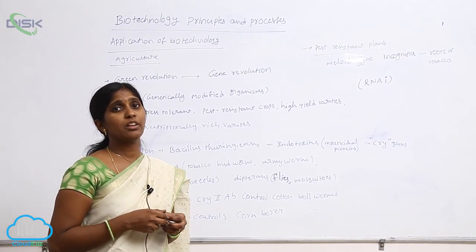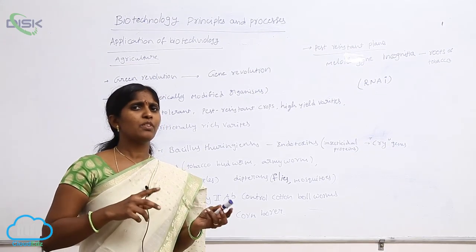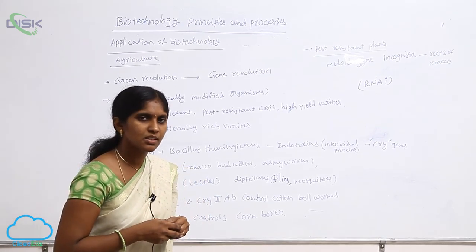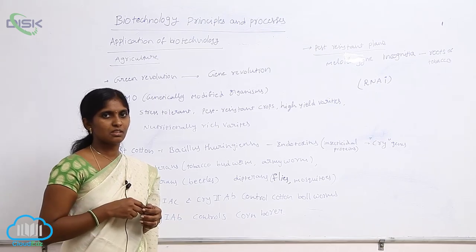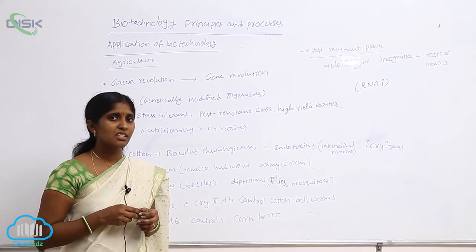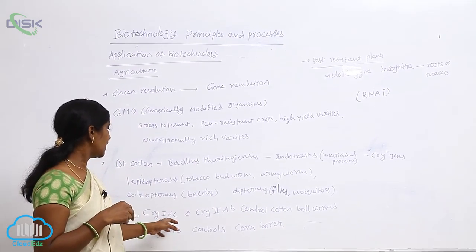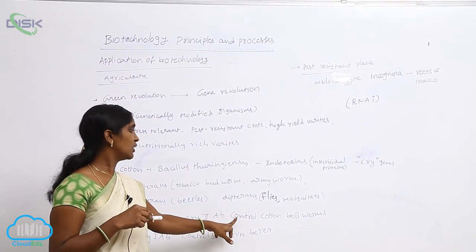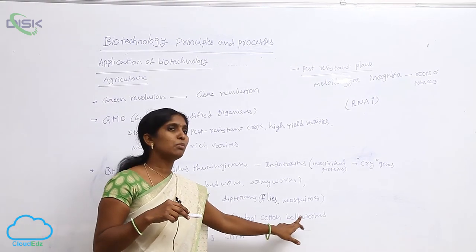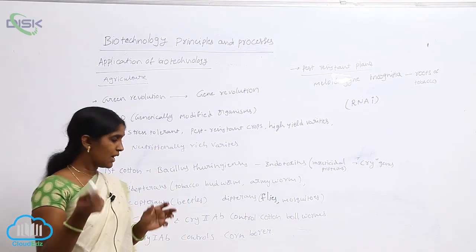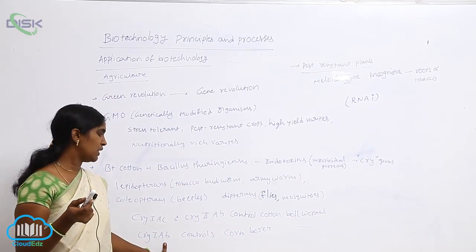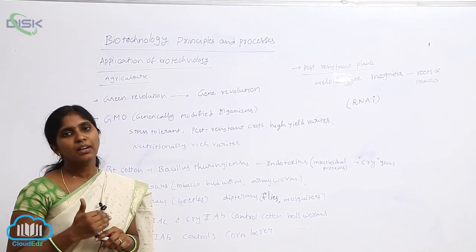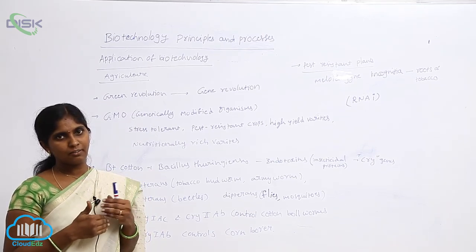Different cotton varieties are available in the market. From one variety to another, they are differentiated because of the type of genes. The basic gene is the cry gene. Here you can see cry1ac and cry2ab — these genes control the cotton bollworms. Cry1ab controls the corn borer. According to that, they prepared single-Bt and double-Bt varieties.